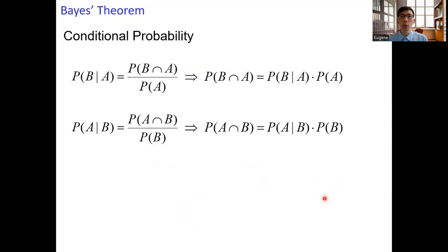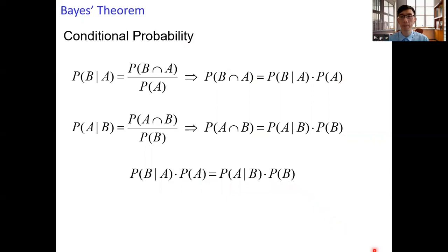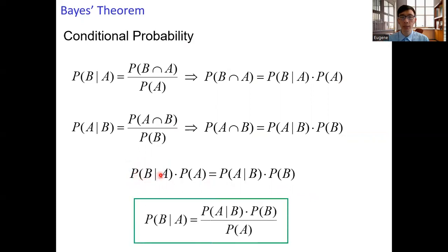So we can equate the right-hand sides of the two expressions. We have the probability of B given A times the probability of A equals the probability of A given B times the probability of B. Suppose we want to compute the probability of B given A. We can express this as the probability of A given B times the probability of B over the probability of A. And this is the Bayes' formula.